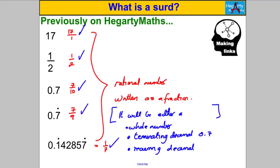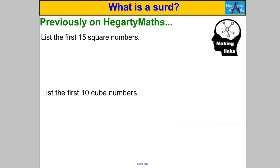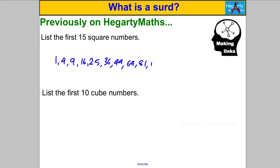Just before we get onto that, we need to be able to state the first 15 square numbers and the first 10 cube numbers — pause the video and check you remember those. The first 15 squares are: 1, 4, 9, 16, 25, 36, 49, 64, 81, 100, 121, 144, 169, 196, and 225. I really want you to be able to know them as quickly as I do.